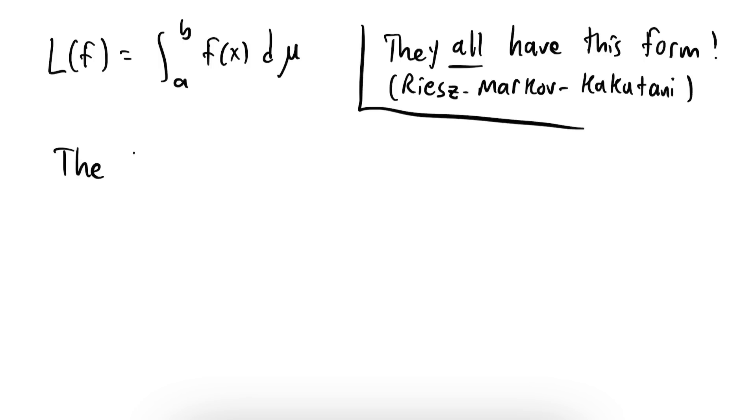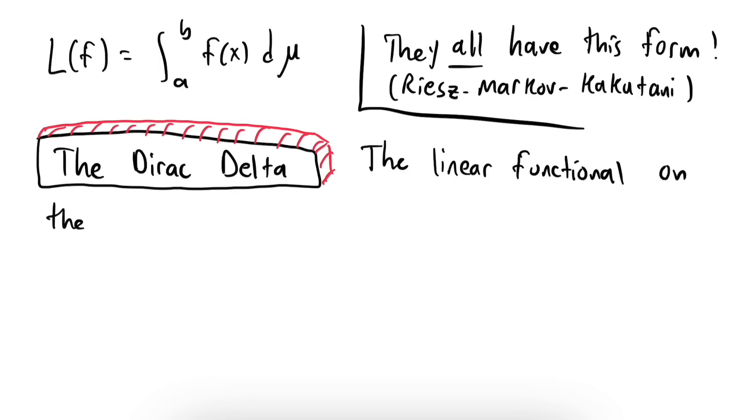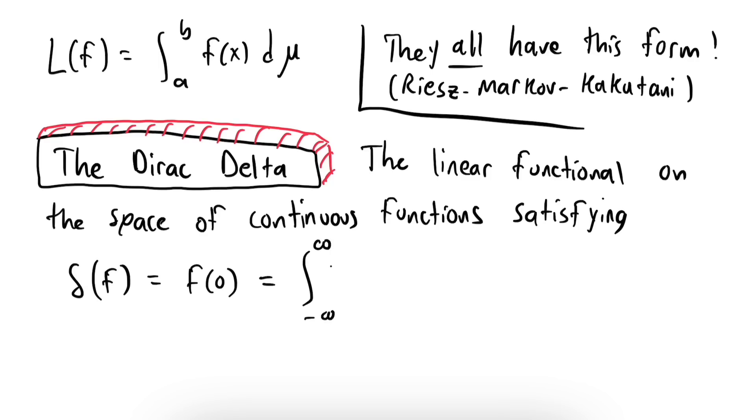So, if we take μ to be the Dirac measure, we arrive at our final, truly rigorous definition of the Dirac delta. It's a linear functional on the space of continuous functions that returns the value of f at zero, and it's given by integration with respect to the Dirac measure. Furthermore, as we saw, we can intuitively think of this as the usual integral of f times a density function, which is infinite at zero, and zero elsewhere. So that ends our discussion of the Dirac delta. I hope you enjoyed the video, and keep learning.